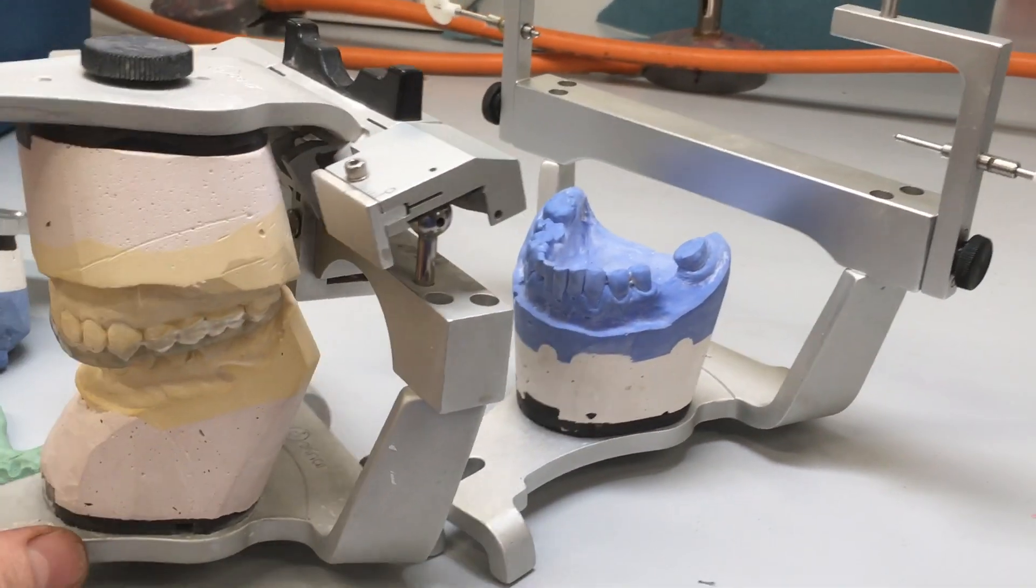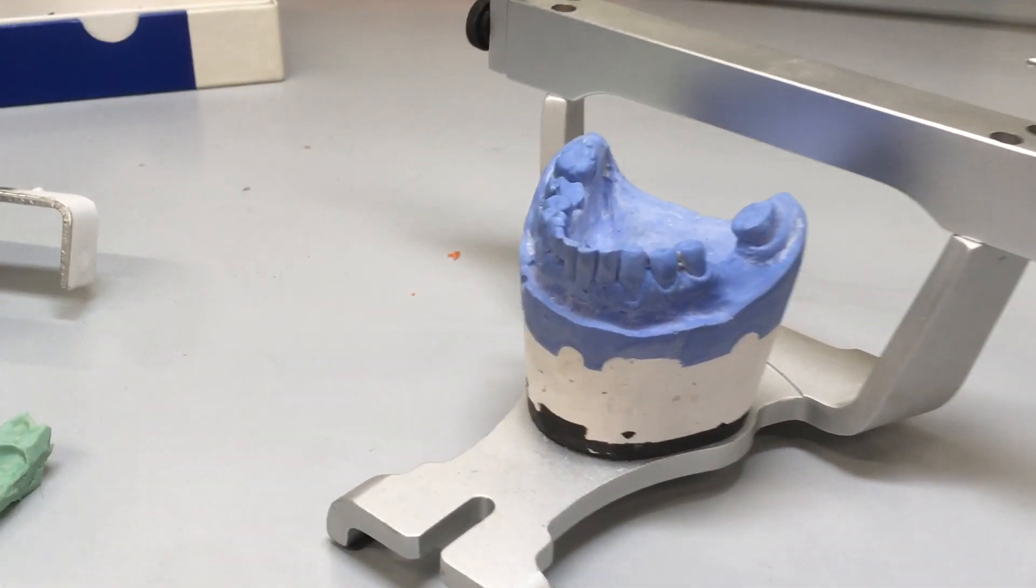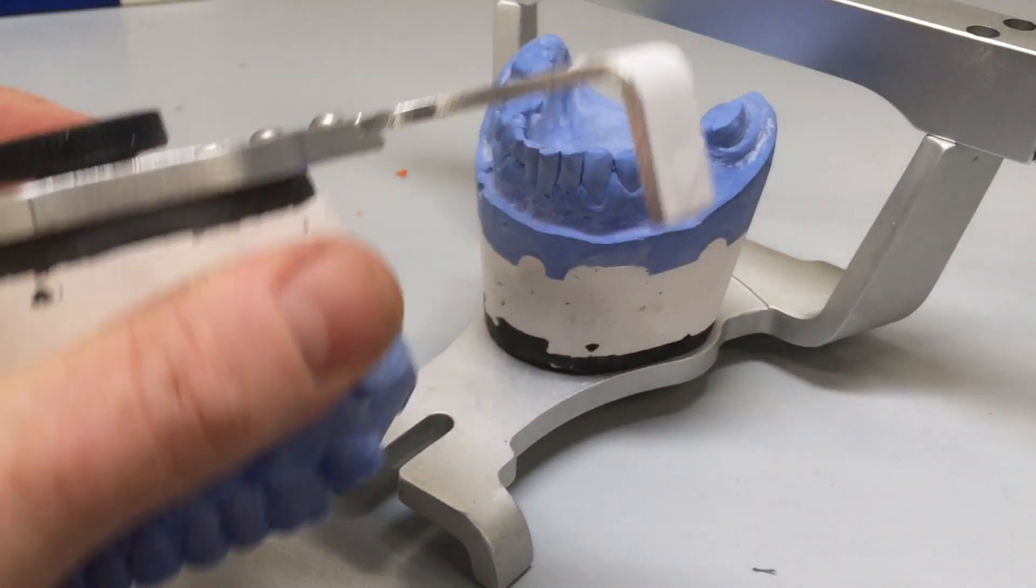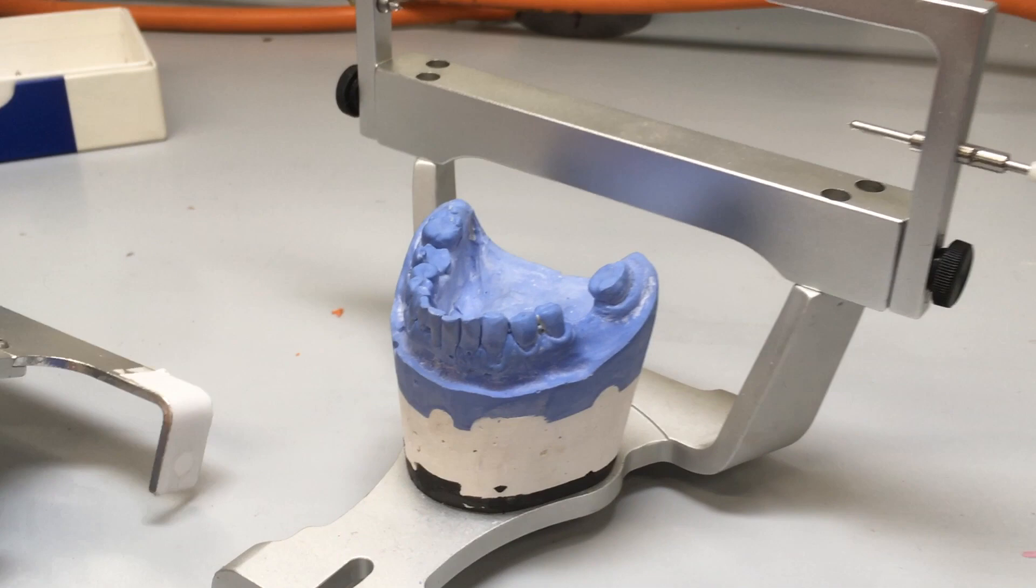This is the hinge, and on this device which is also produced by DNR, it's called the Veri-Check. There's a new one called a Centric Check. Through the condyle we have a stylus, and the maxillary part that you can see fits in between the two styli.